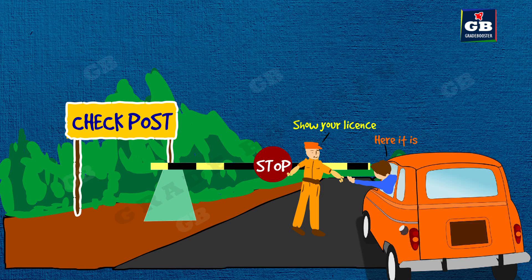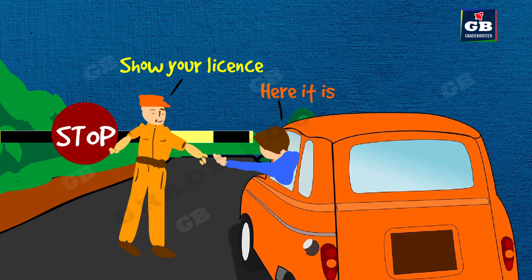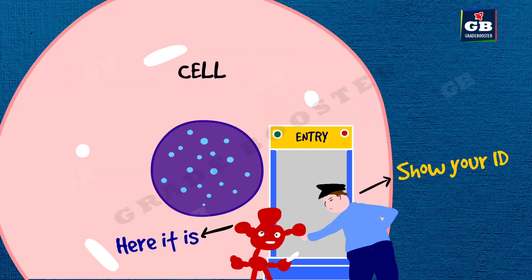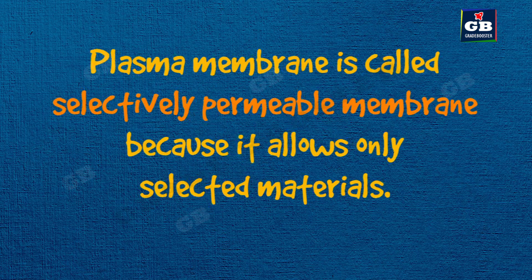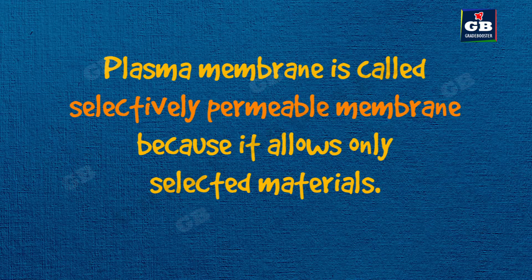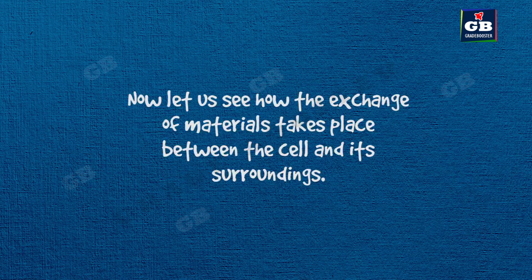This works like a checkpoint between two different states, where checking of vehicles and verification of licenses is done. In the same way, the cell membrane verifies materials and decides whether to allow them or not. It permits only selected materials, which is why it is called a selectively permeable membrane.